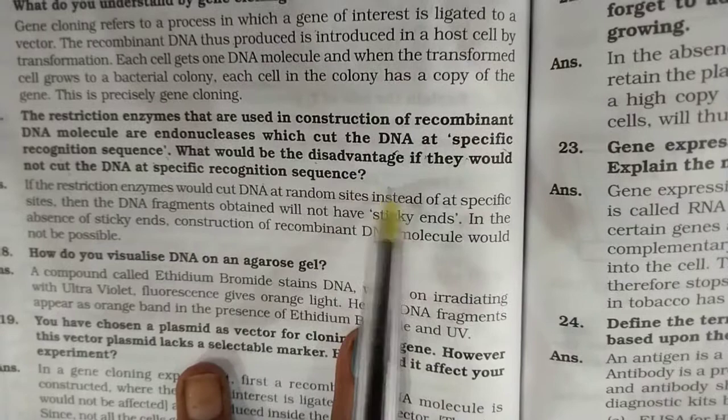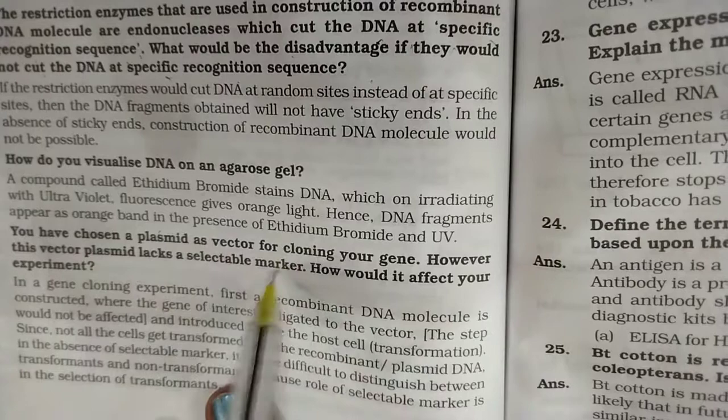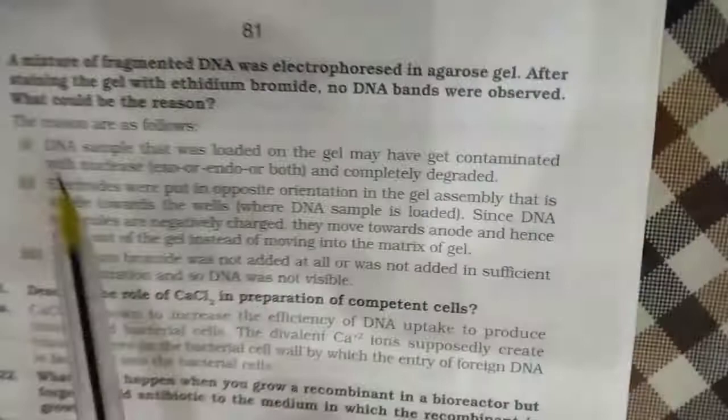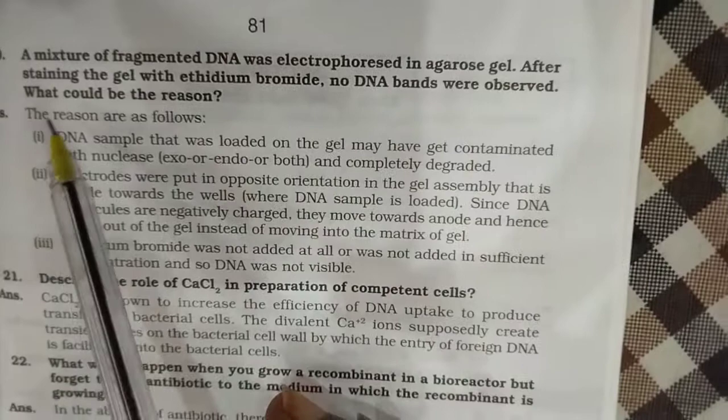Question sixteen: The restriction enzymes used in construction of recombinant DNA molecules are endonucleases which cut DNA at specific recognition sequences. What would be the disadvantage if they did not cut DNA at specific recognition sequences? Question seventeen: How do you visualize DNA on an agarose gel? Question eighteen: You have chosen a plasmid as a vector for cloning your gene, but this vector lacks a selectable marker — how would it affect your experiment? Question nineteen: A mixture of fragmented DNA was electrophoresed in agarose gel, and after staining with ethidium bromide no DNA bands were observed — what could be the reason?